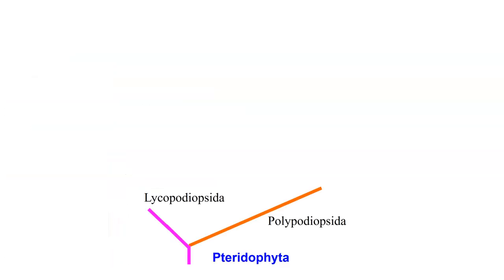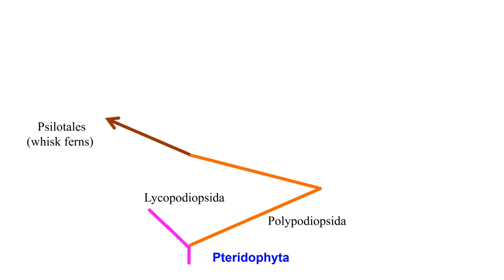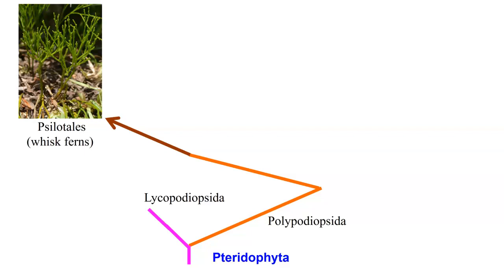The other group we can look at is the polypodiopsida — 'poly' meaning many — and here we start to get things that are a little more advanced. First is the psilotales, which we call the whisk ferns. The whisk ferns are rather unique. When you look at one you really don't see a lot of leafy structure; the whole body is basically photosynthetic. It looks like a whisk — the kitchen tool with all the little branches — and that's why we call it a whisk fern.